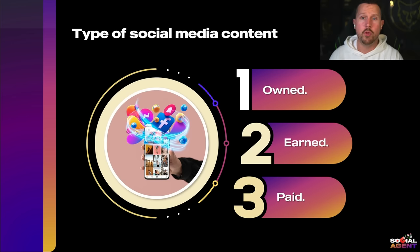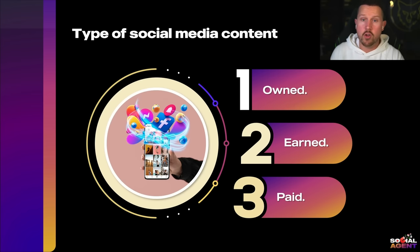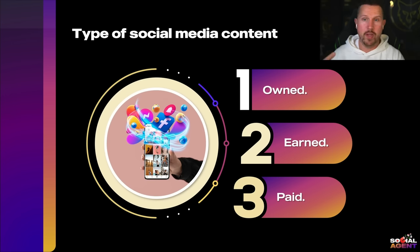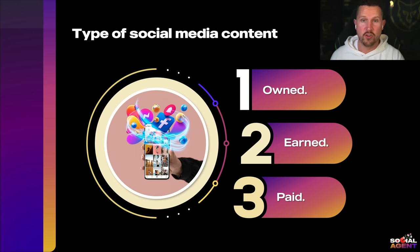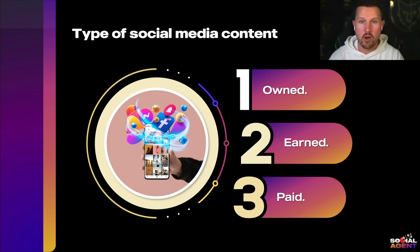Here's an interesting concept that most people don't understand: the three different types of social media content — owned, earned, and paid. Owned is content like YouTube, TikTok, Instagram, and LinkedIn — free organic content you own. Paid is paid advertising like Facebook ads, Instagram ads, YouTube ads, and TikTok ads. Earned media is really powerful and underutilized — it's using other people's audiences to earn their trust and marketing exposure. This includes collaborating with other business owners, getting featured on podcasts, and capturing their audiences. A lot of people are not spending enough time on earned media, and it's the easiest way to scale.